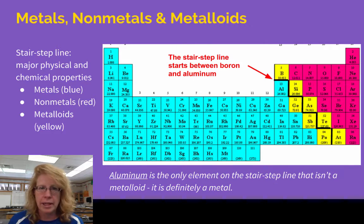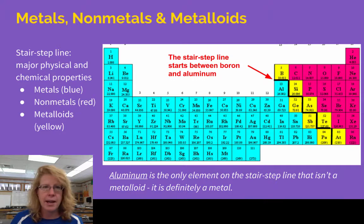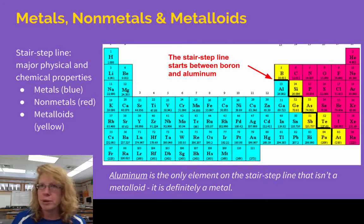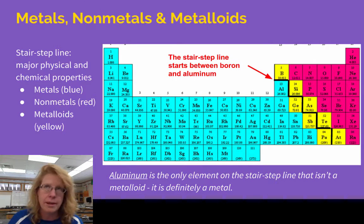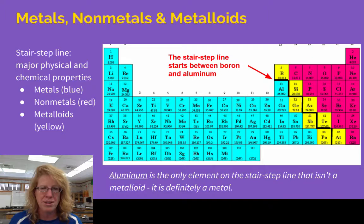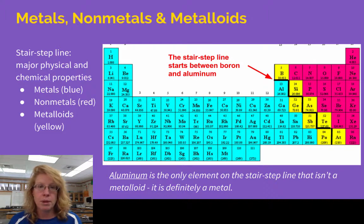Metals — you guys know what metals look like. They're silver-ish, they're shiny, they're ductile — you can pull them into wires. You can bend them; it's malleable. They have a certain density to them, they're not brittle, and they have different kinds of melting points. All of the things in blue on this periodic table fall into that category, even some things that aren't obviously metals to you, like potassium, calcium, and sodium.